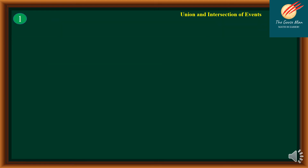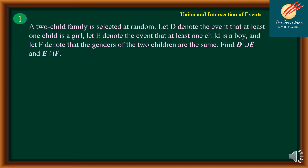To illustrate the terminologies we have recalled, let's use this word problem. A two-child family is selected at random. Let D denote the event that at least one child is a girl. Let E denote the event that at least one child is a boy. Let F denote the event that the genders of the two children are the same.